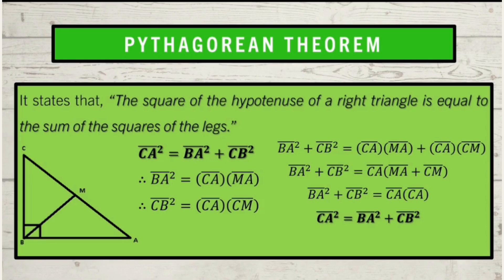Congratulations, dear students! You have successfully proved the Pythagorean theorem. Just always remember the famous formula: C squared is equal to A squared plus B squared, where C is the hypotenuse and A and B are the legs.